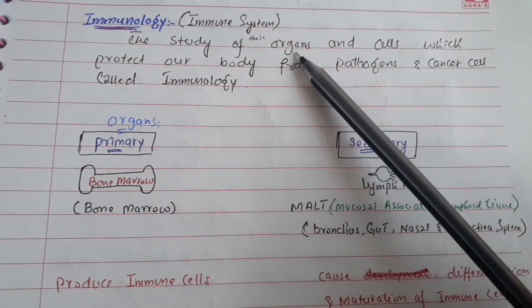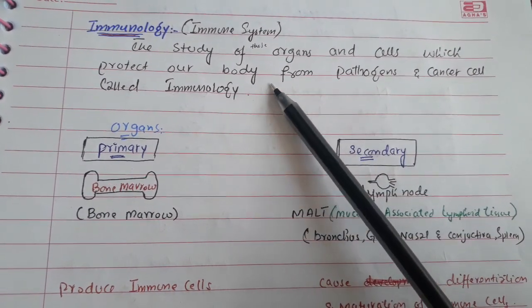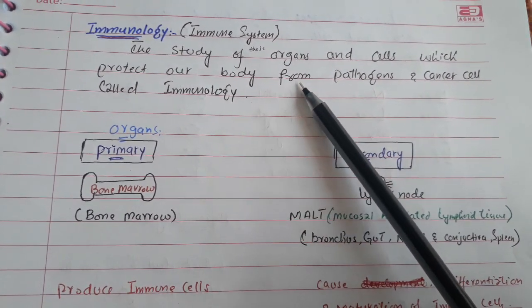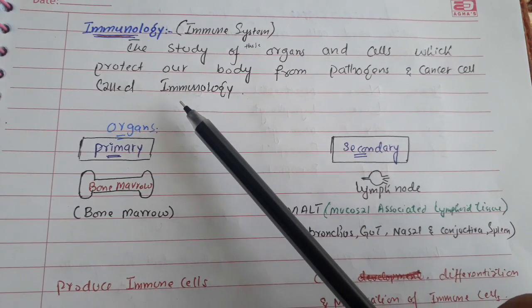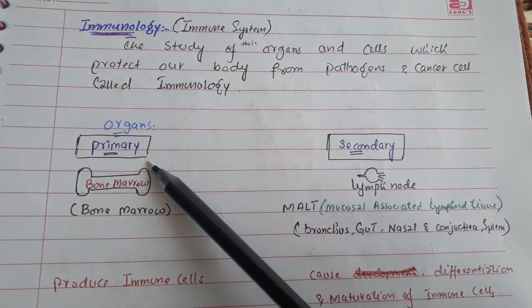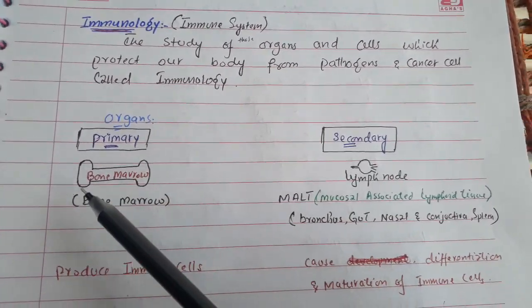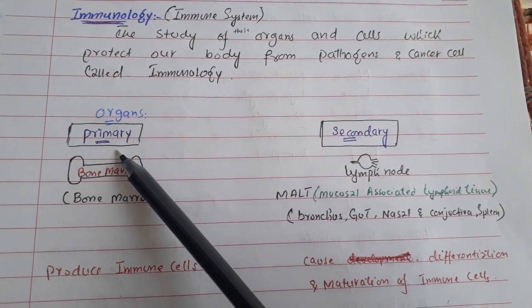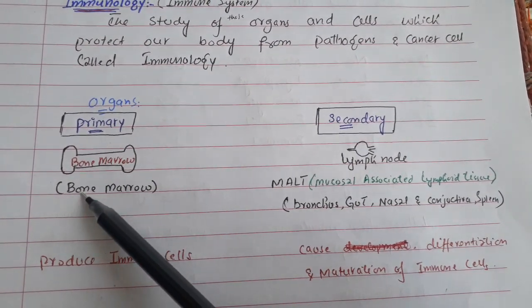Immunology is the study of those organs and cells which protect our body from pathogens and cancer cells. There are organs of the immune system and cells of the immune system. The organs are divided into primary organs and secondary organs.